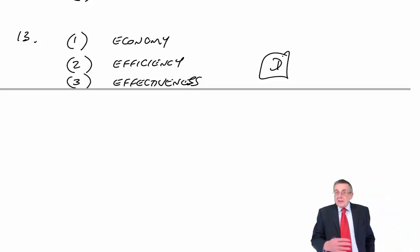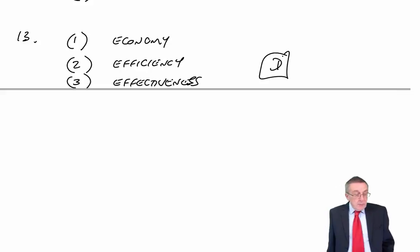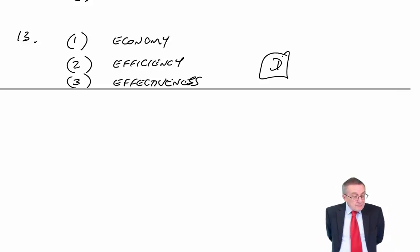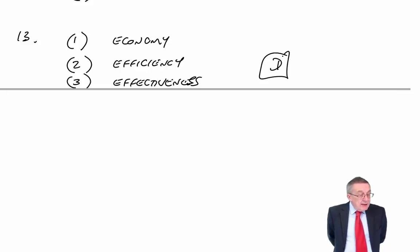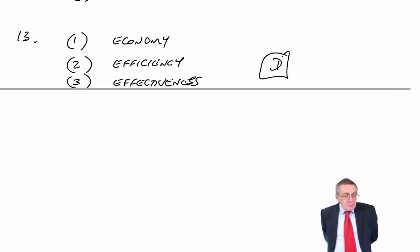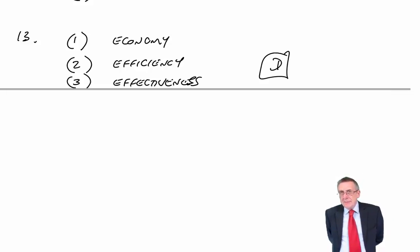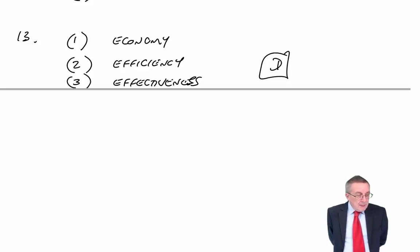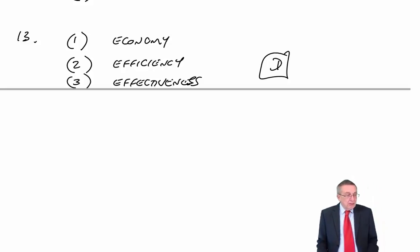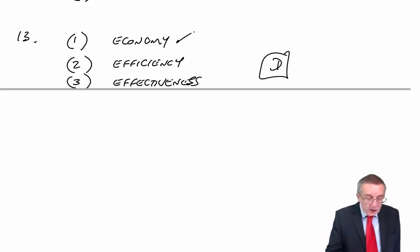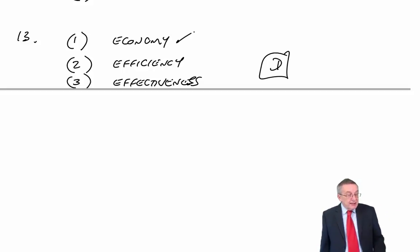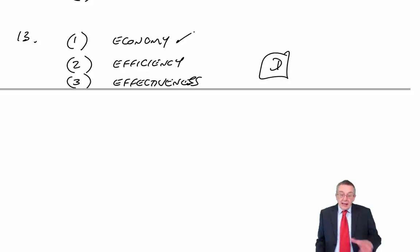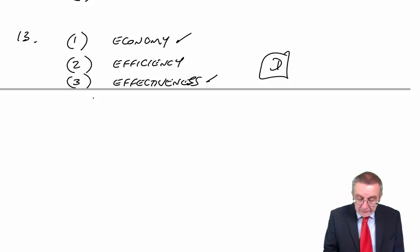One nice thing there: even if one of those three statements confused you, if you get any two of them right, you automatically get all three right. So if you read number two and thought 'I've no idea' — you know number one is economy. If you can't decide whether number two is efficiency or effectiveness, look at number three. If number three is effectiveness, then number two has to be efficiency.